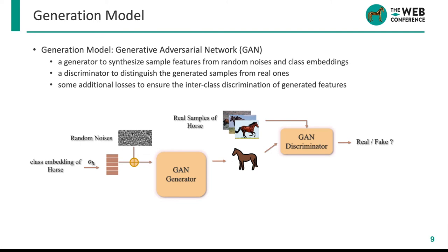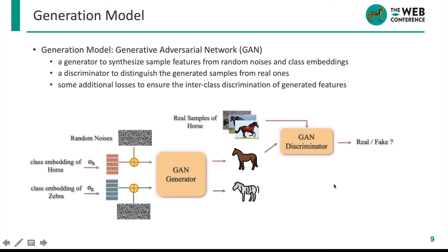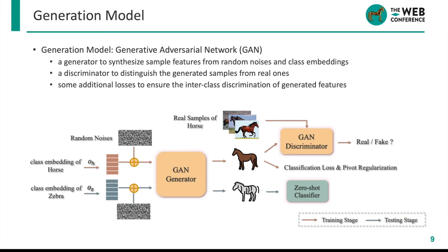With the well-trained generator, at the testing stage, given the class embedding of an unseen class like zebra, the model can generate its samples, which are used to train a classifier. There are also additional losses to enforce the generator to synthesize more plausible samples. With the generated unseen class data, the ZSL problem is turned into a traditional supervised learning problem, which avoids the bias towards seen classes during prediction — a common issue in other ZSL methods.